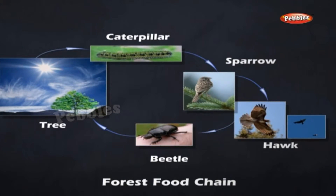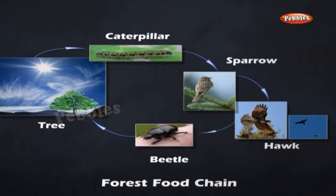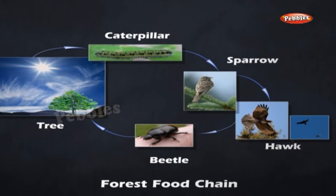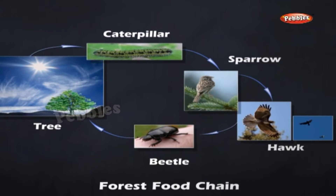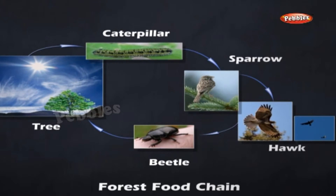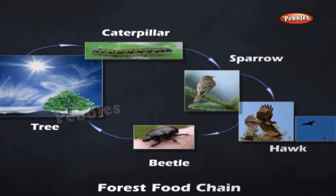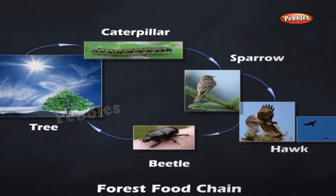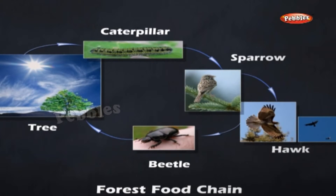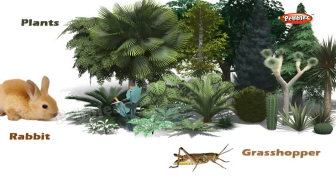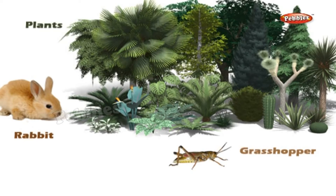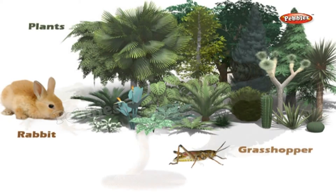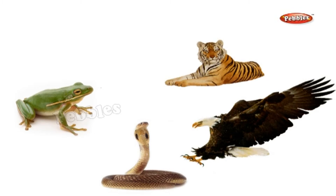Food Web: The feeding patterns in a community are much more complex than simple linear chains. It is rare to see an organism feeding only on one type of organism. Each organism feeds on two or more kinds of organisms. Hence, several food chains are interconnected under natural conditions. This interconnected network of food chains is called a Food Web. For example, grass or plants may be eaten by grasshopper as well as rabbit, cattle, and deer. Each of these herbivores may be eaten by a number of carnivores like frog, bird, snake, and tiger depending on their food habit.